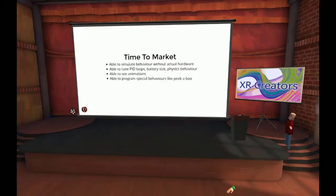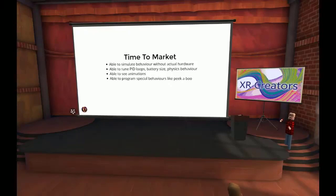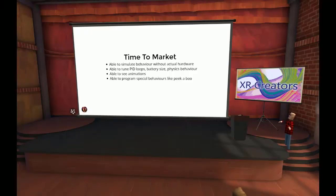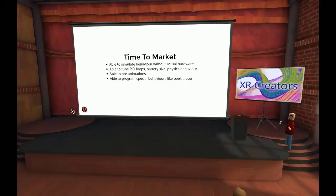Why did they want to do that? They wanted to shorten the time to market. They had the plans for the drone ready, but it takes at least six months to get the drone made overseas. In that six months, they would have been sitting there doing nothing. Because we were able to do a simulation, they could simulate the behavior without having the hardware. They were able to tune the physics, determine if their battery was going to be big enough, and see the animations their artists did — the drone had a display on its face with animations that would react to various events.